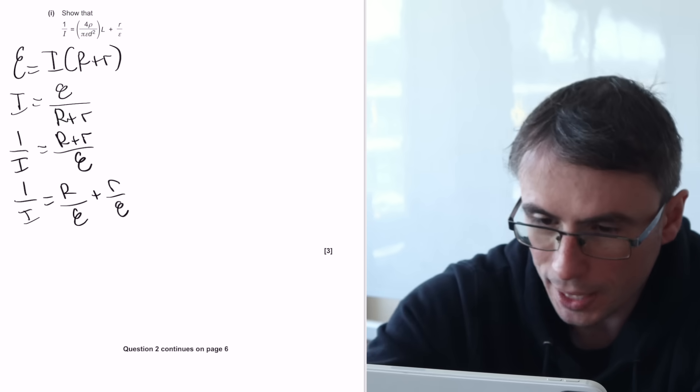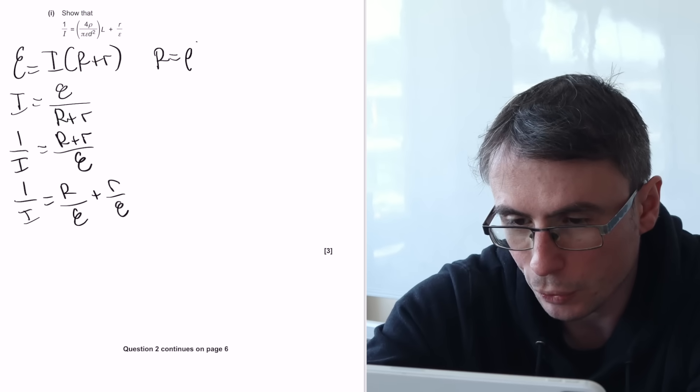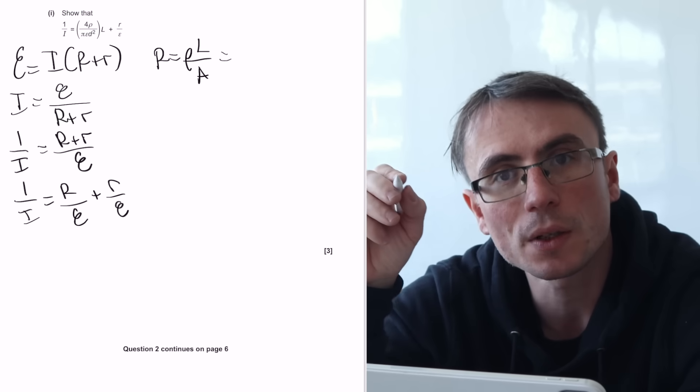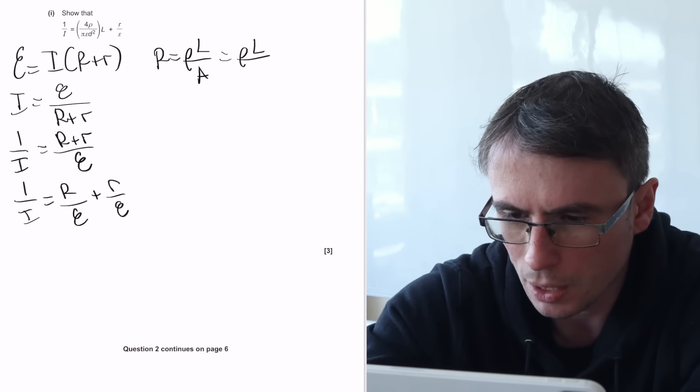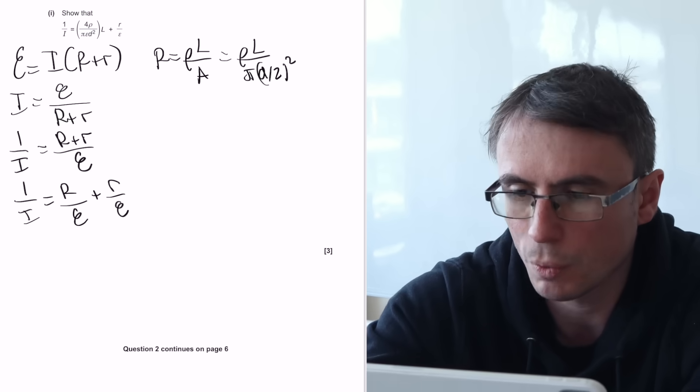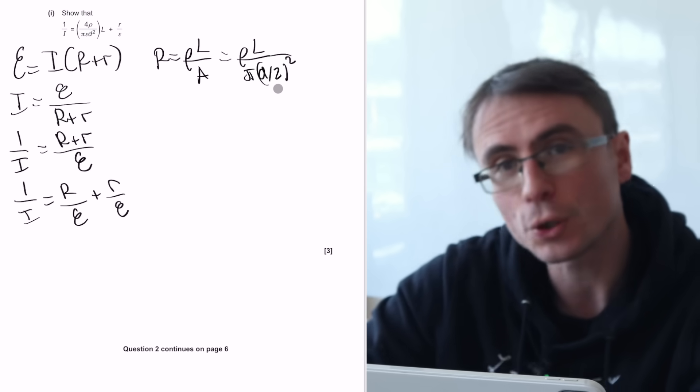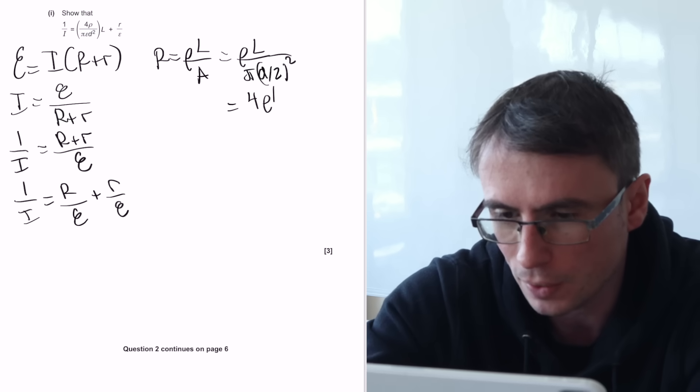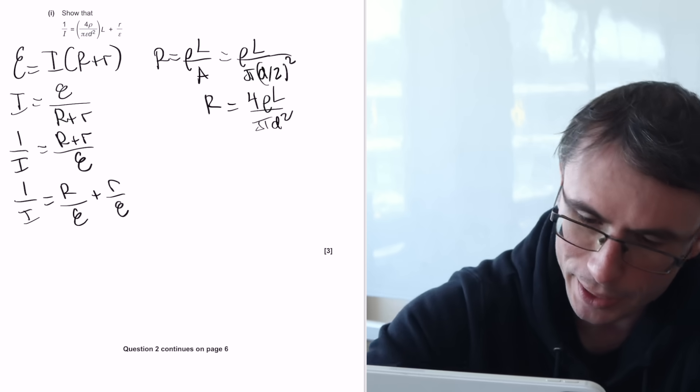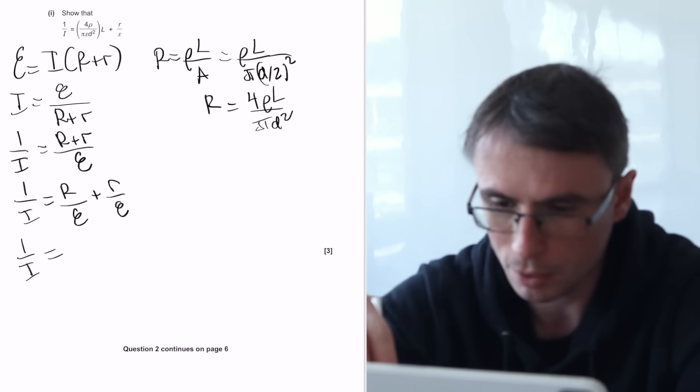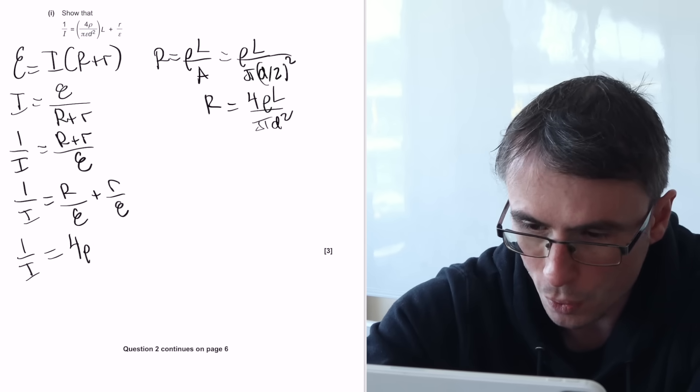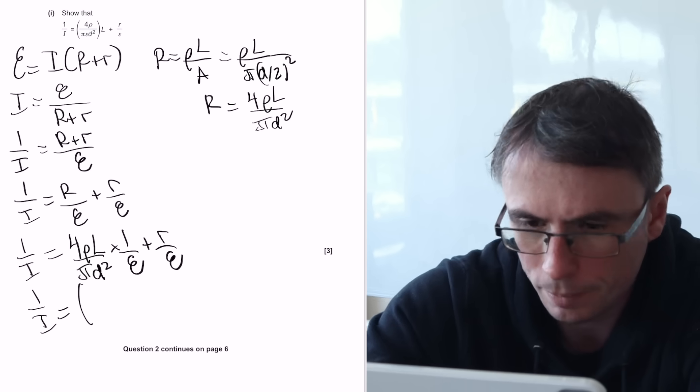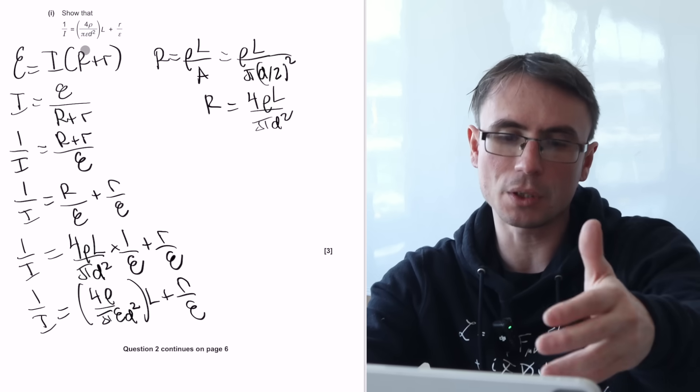And now we're going to use the fact that the resistance is equal to resistivity multiplied by the length divided by the cross-sectional area. In this case, our cross-sectional area is going to be the circular area of a wire. So we might as well just write that this is equal to pi D over 2 squared. And we're going to be really careful with this fraction with a fraction inside of it. So that means that we are going to get essentially a factor of 4 up here, which is 2 squared over pi D squared. Let's bring this back into the equation. 1 over I is going to be equal to 4 rho L over pi D squared multiplied by 1 over epsilon. And we have shown this with clear steps starting from the top, finishing right at the bottom.